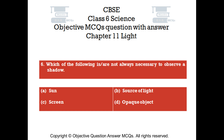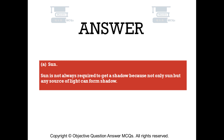Question number 6. Which of the following is/are not always necessary to observe a shadow? Option A: sun. Option B: source of light. Option C: screen. Option D: opaque object. The right answer is option A — sun. Sun is not always required to get a shadow, because not only the sun but any source of light can form a shadow.